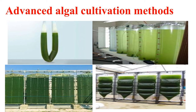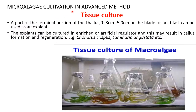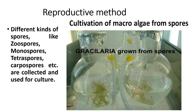Advanced algal cultivation methods consist of different types applicable to both macroalgae and microalgae. The first is the tissue culture method. Here a part of the terminal portion of the thallus — which could be 0.3 cm to 5 cm — or a blade or holdfast can be used as an explant. The explant can be cultured in enriched artificial medium with plant growth regulators, which may result in callus formation and regeneration. Examples of macroalgae grown by this tissue culture method are Chondrus crispus and Laminaria angustata.